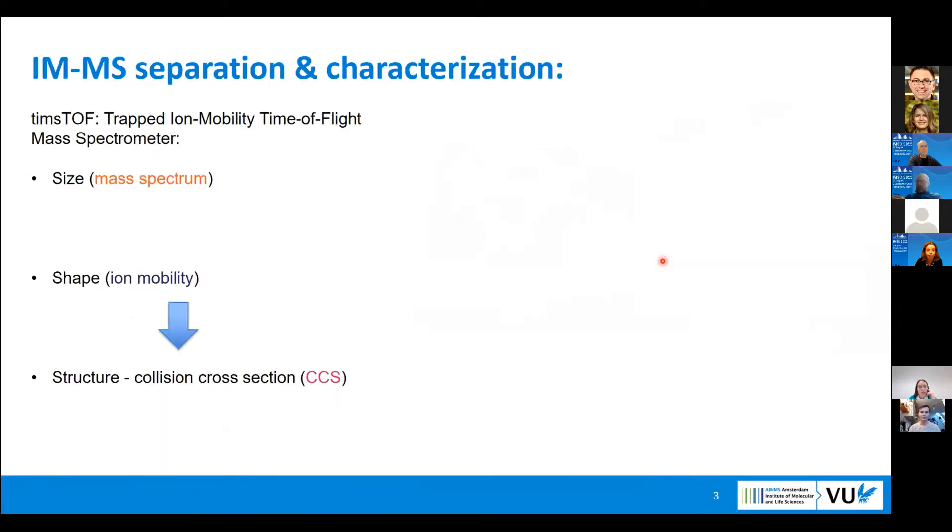In our case, we have ion mobility mass spectrometry, and in particular, it's trapped ion mobility. It allows us to have information about the size, the shape of the molecules, and also the structure information via collision cross-section.